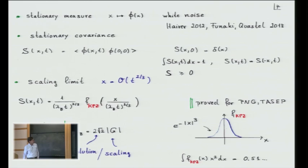About this equation, we know a lot. First of all, there's a stationary measure. If I look at the stationary process at one given time, it will have the distribution of spatial white noise — delta correlated in x. And of course, if you integrate once, this means that for the KPZ equation, two-sided Brownian motion is actually the stationary measure.